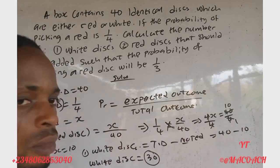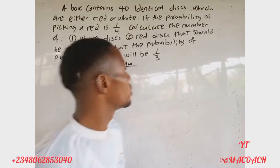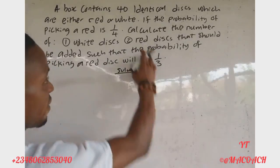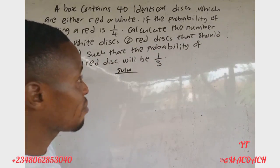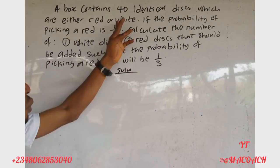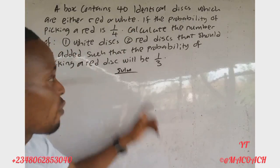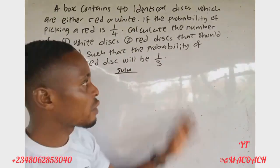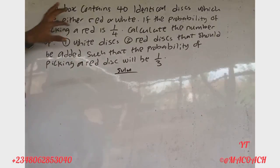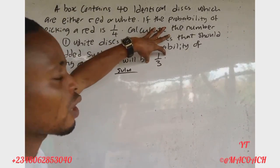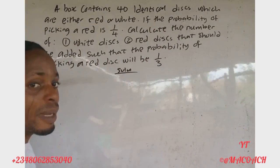So the answer to question one is 30 white disks inside the bag. Now let's solve question two. Some red disks are added to the bag so that the probability of picking a red disk becomes 1/3. Previously the probability of red was 1/4. We need to find how many red disks, s, were added.